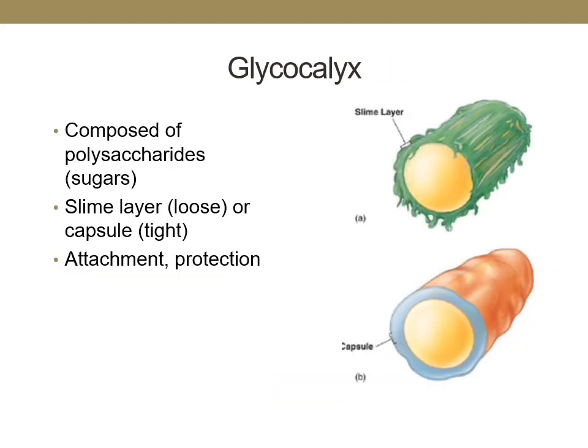Not all microbes have a glycocalyx, but if present, it is the outermost layer covering the cell. These structures are composed mostly of polysaccharides and are either of the capsule or slime layer type. Capsules tend to be thicker, rigid, and smooth, while slime layers are much thinner and loose. The extra layer helps protect the cell from desiccation and also protects some types of organisms from phagocytosis during a host infection. These structures also allow cells to attach to surfaces and to other cells.